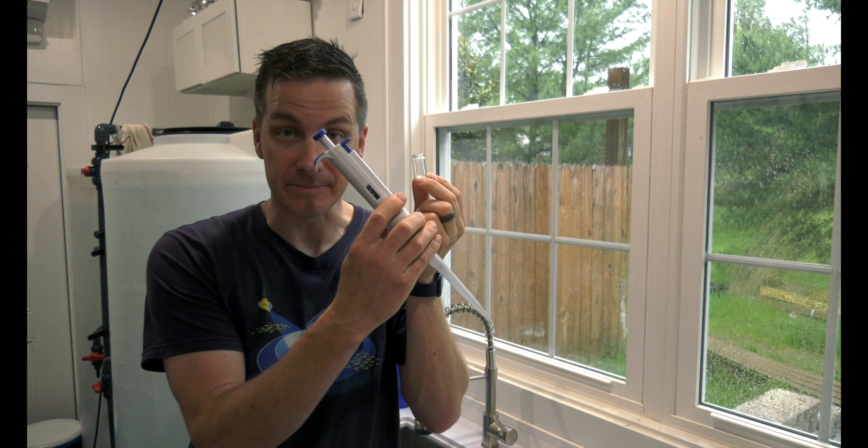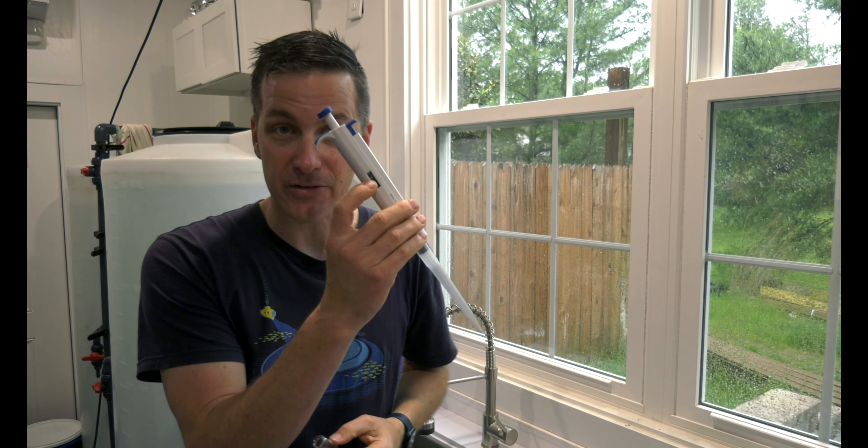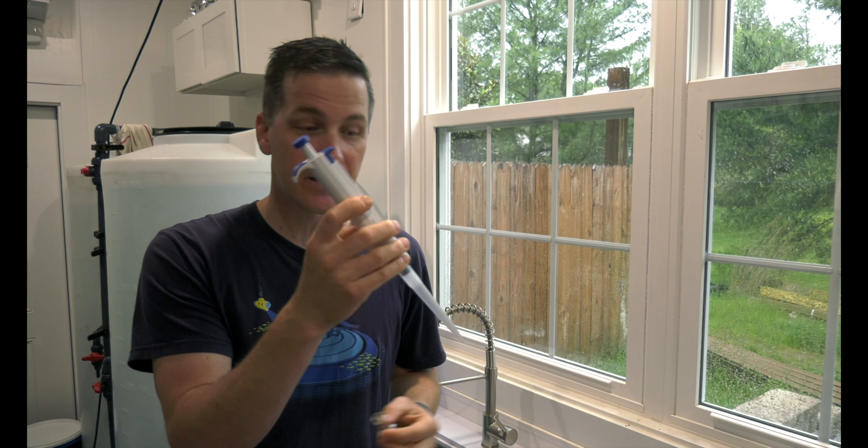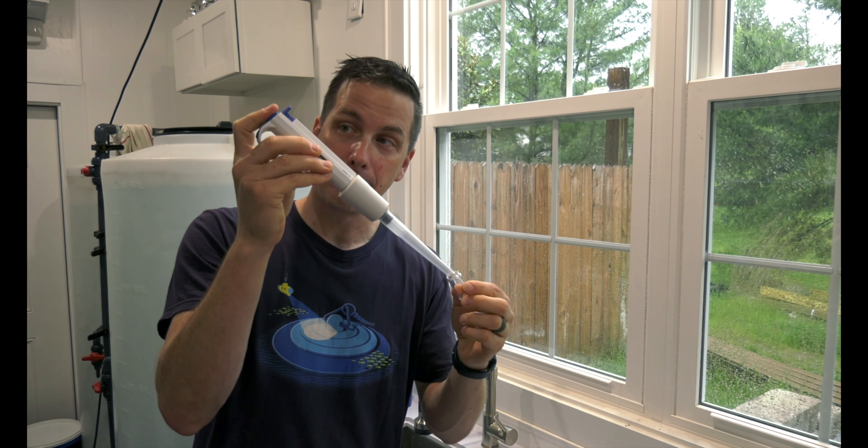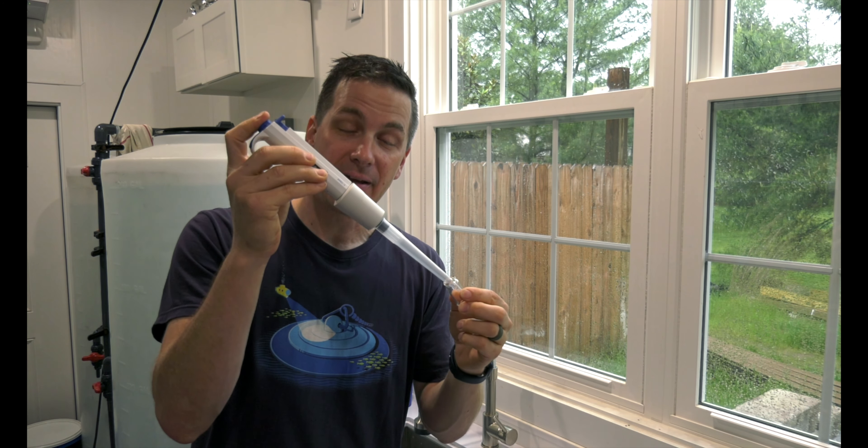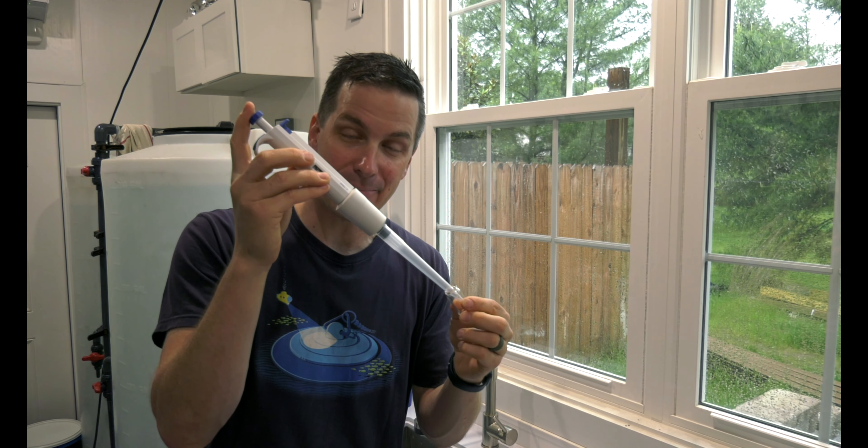Grab yourself the micro pipetter. All you have to do is dial in how much water you want to dispense out of the pipetter, then place the tip down in the vial, boom, push the plunger, and you've easily dispensed an exact amount of tank water.